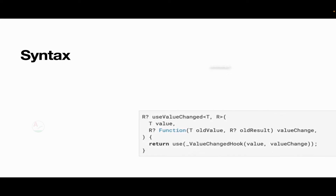Let's try to see the syntax first. This is the syntax available from the official documentation. The first thing it will do is make a callback whenever there is any change in the value you have specified. It will accept a value, and whenever there is any change to that value, it will try to implement the functionality you have specified. It will also provide you the old value and old result, which I will be showing in the coming example.